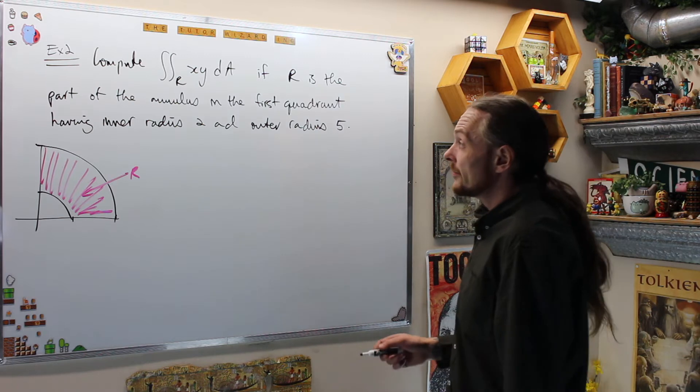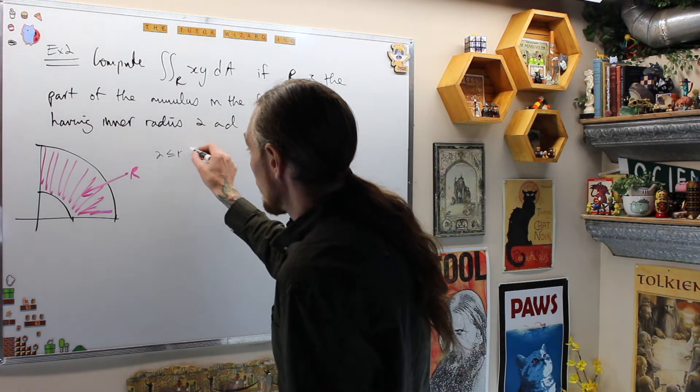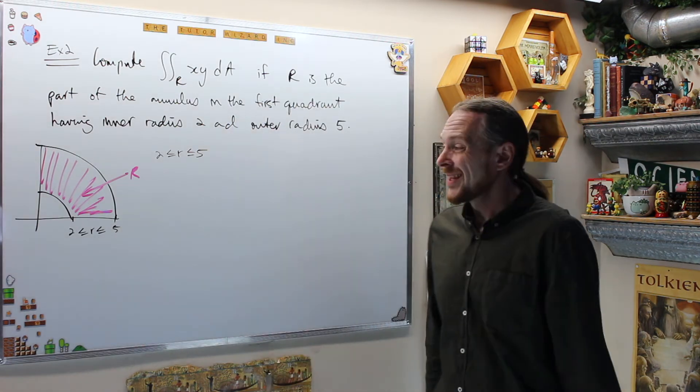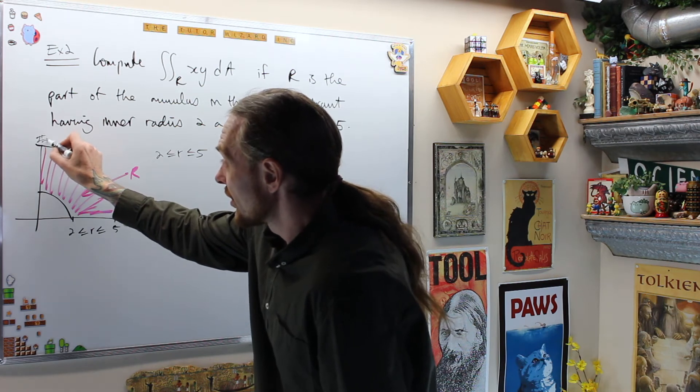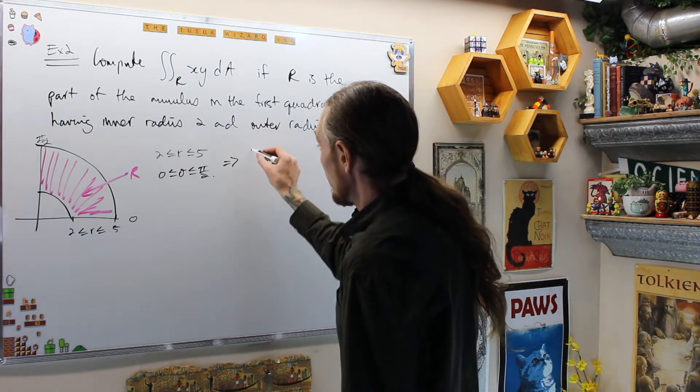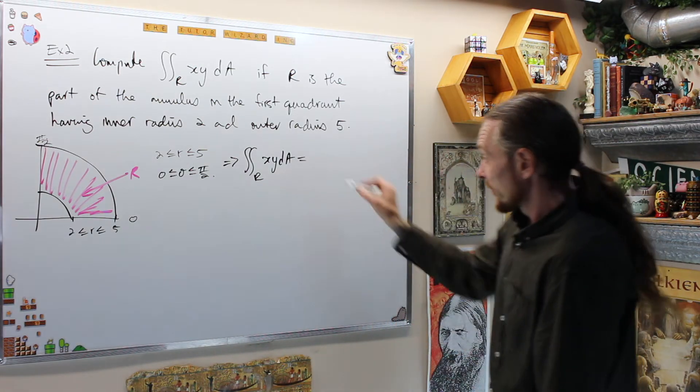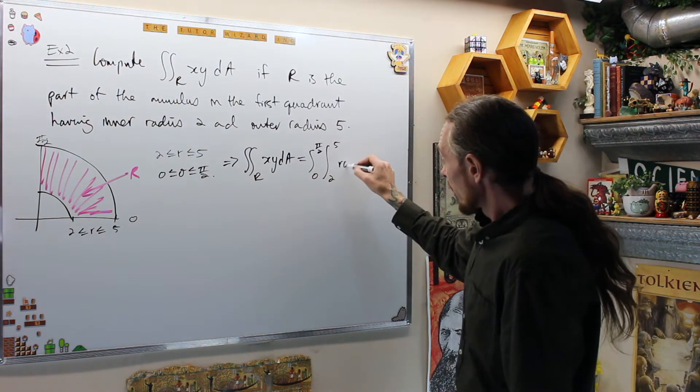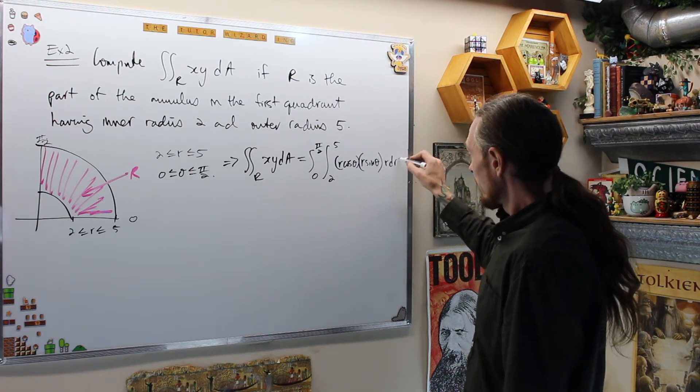From that, what do I get? I get my bounds again from this. This gives me now what? This says 2 is less than or equal to r is less than or equal to 5 is my radius. And then it says theta is going from 0 to pi over 2. Now that I have my bounds, I have the iterated integral in polar form. That tells me that the double integral over R of x, y, dA is equal to the integral from 0 to pi over 2, the integral from 2 to 5 of r cos theta, r sine theta, and then r, dr, d theta.